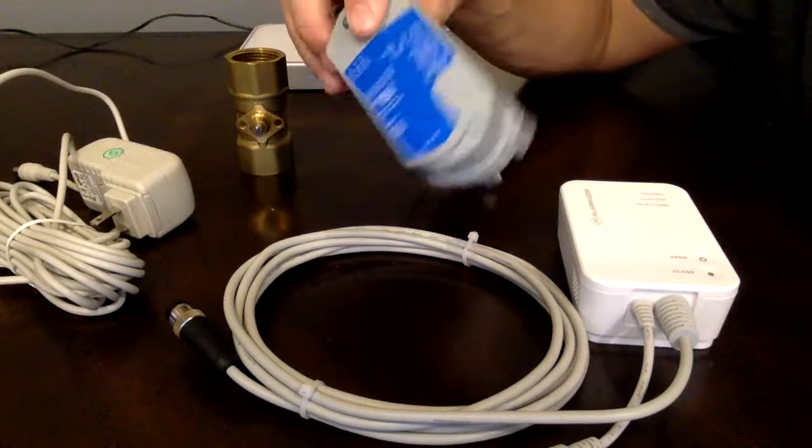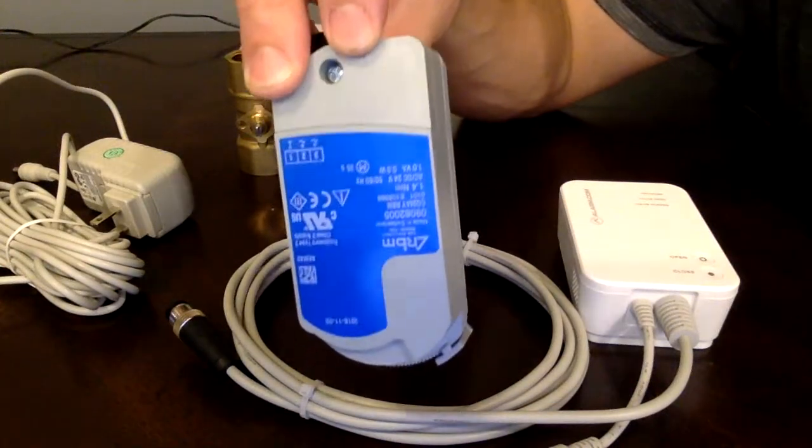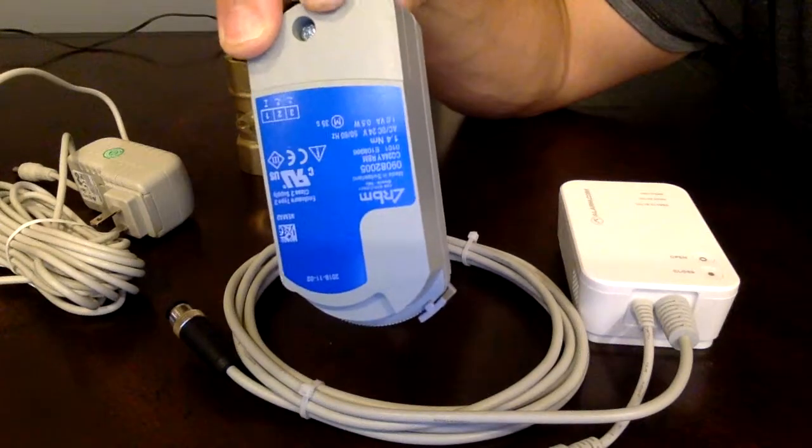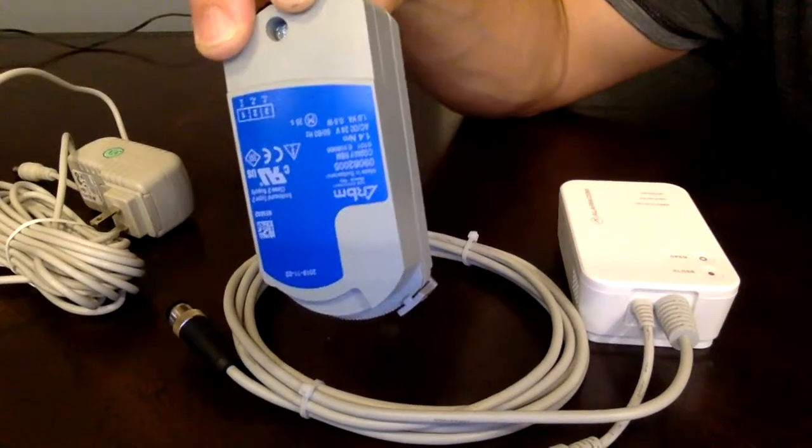Next you have the actuator. This connects to the ball valve and will actually turn it shut when a water leak is detected or when you tell it to.